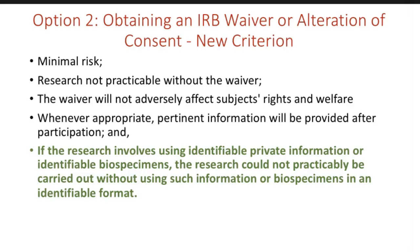Concerning option two — obtaining an IRB waiver or alteration of consent — there is now a new criteria in addition to the first four criteria under the old rule. Specifically, if the research involves using identifiable private information or identifiable biospecimens, one has to show the research could not practically be carried out without using such information or biospecimens in an identifiable format.